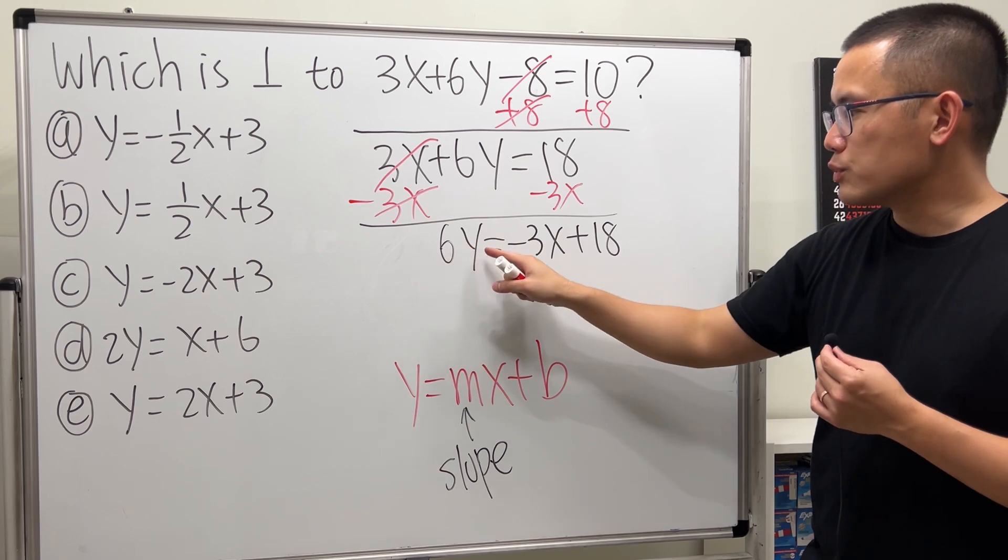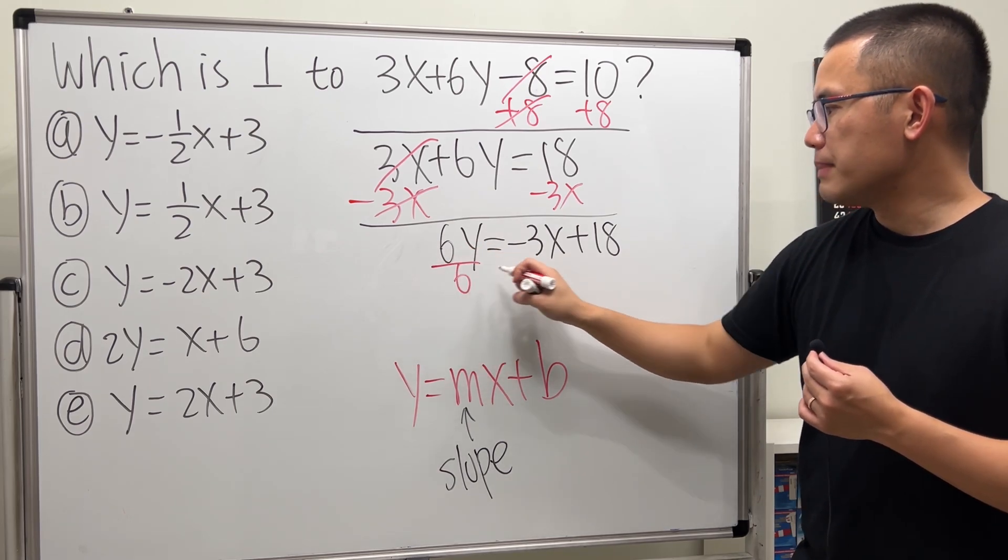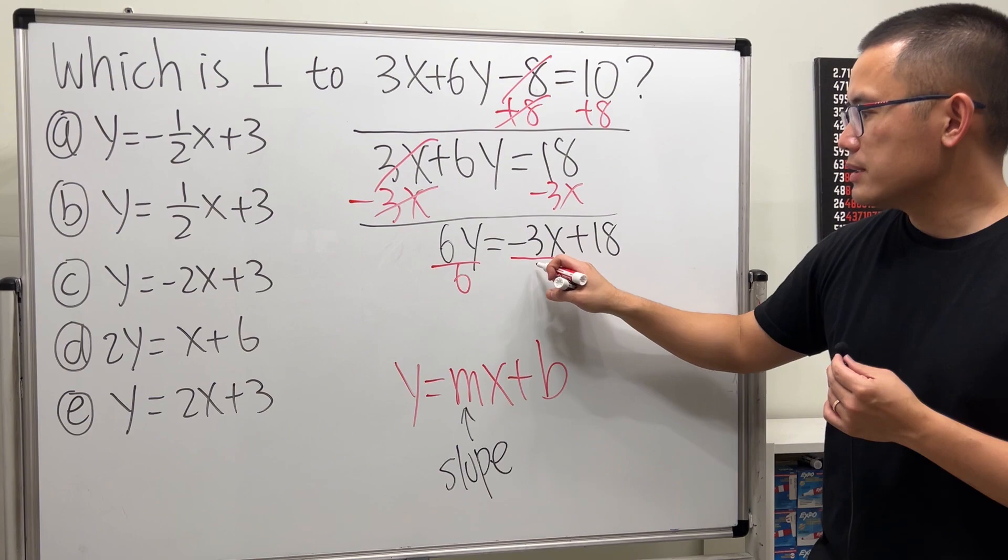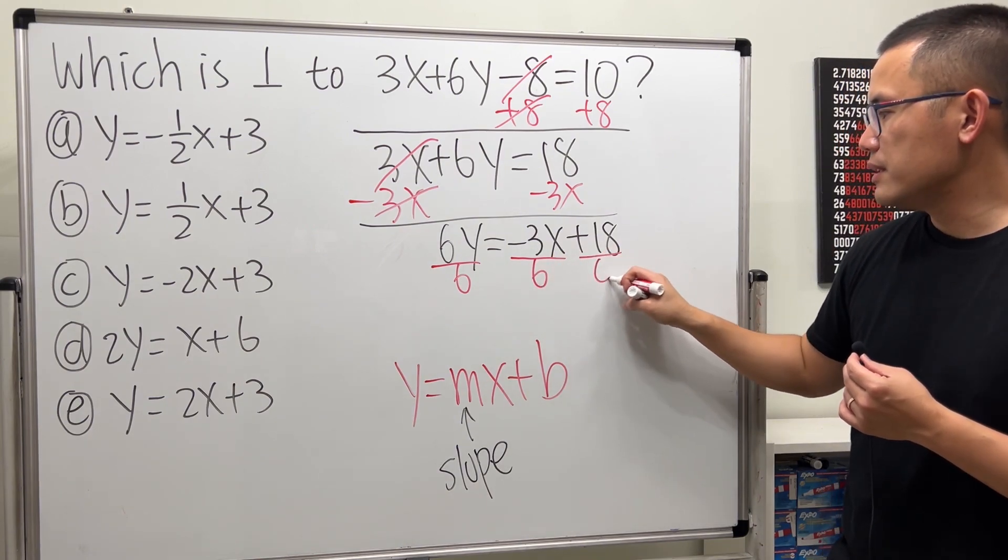Now, this is 6 times y, let's divide everything by 6. And right here, let me just put this over 6, and let's put this over 6 as well.